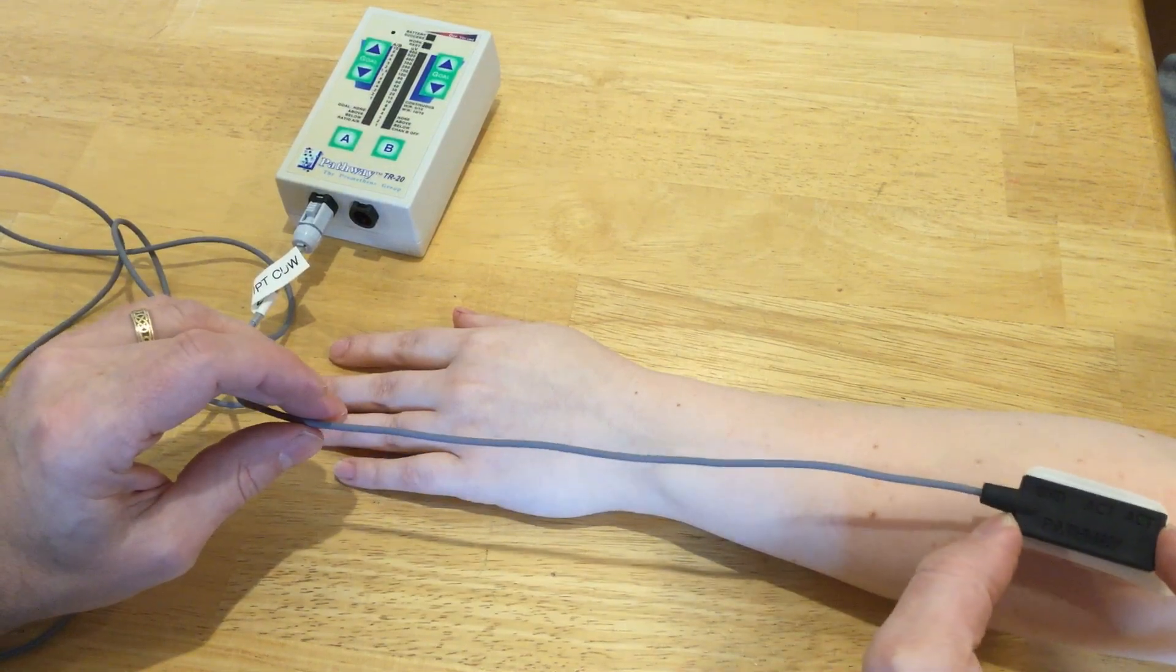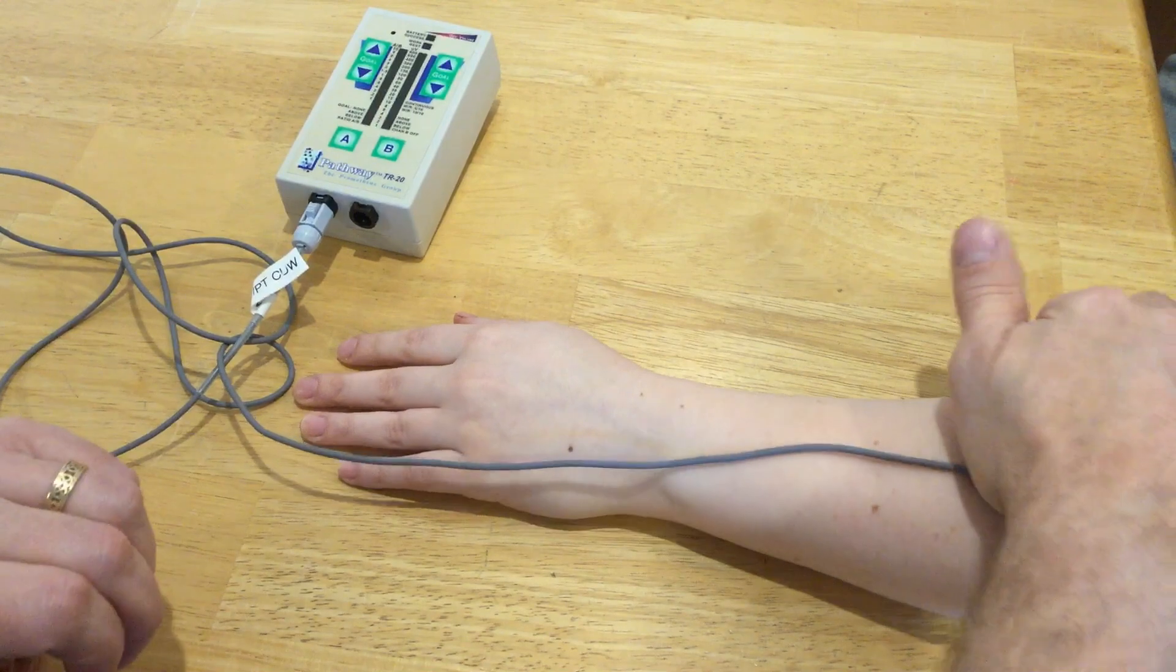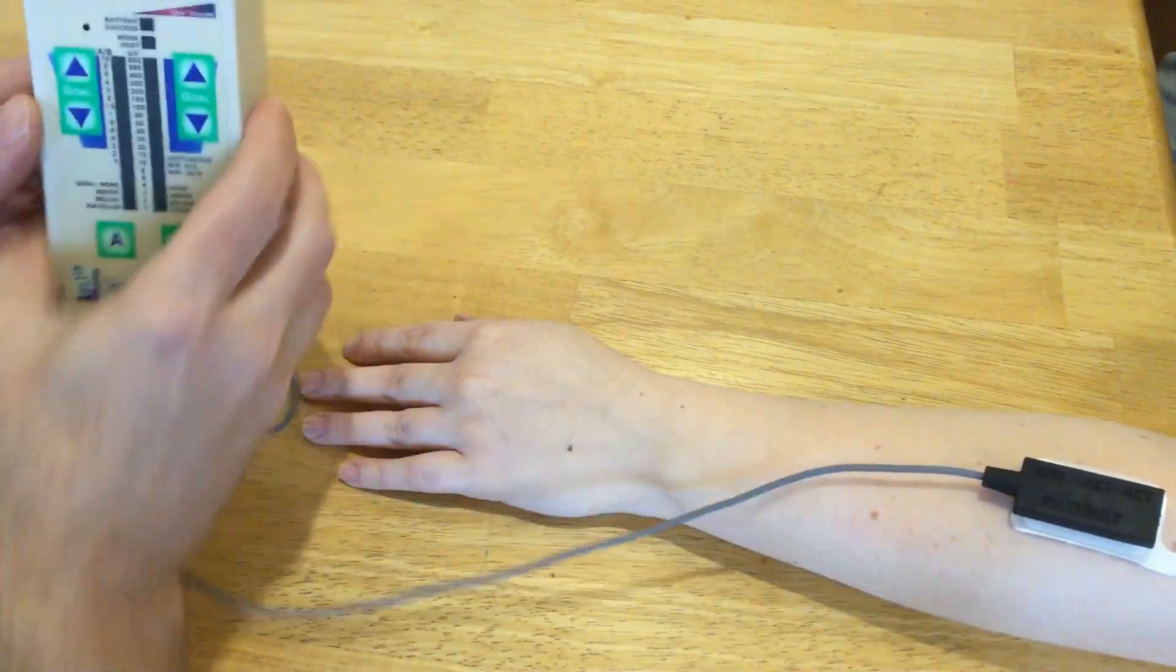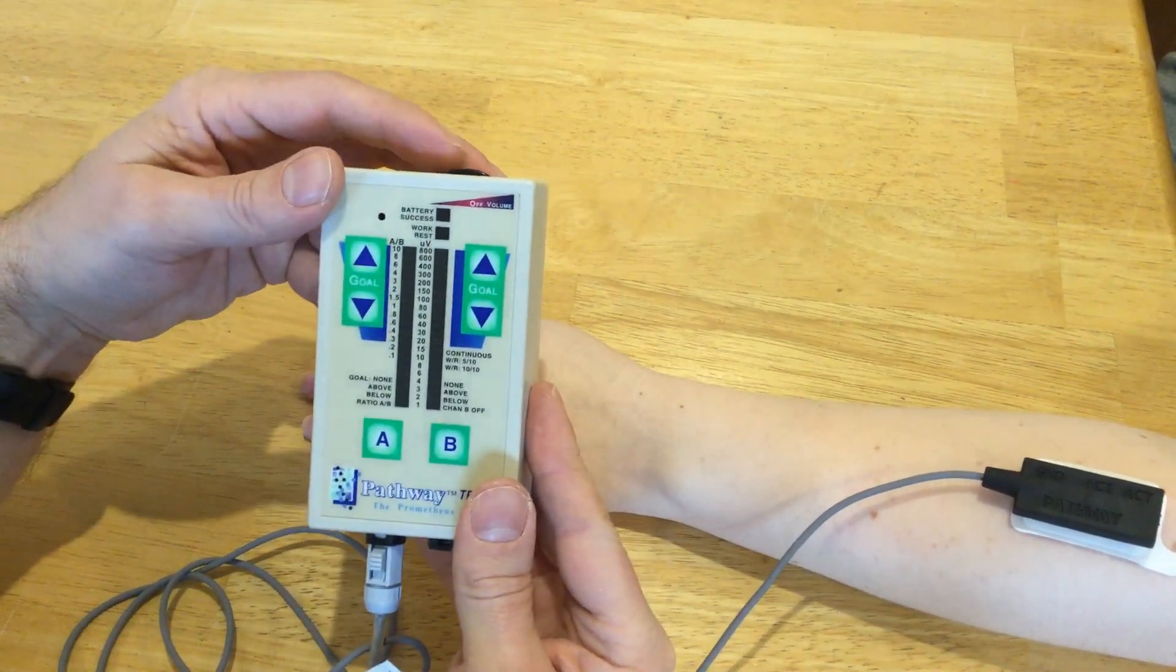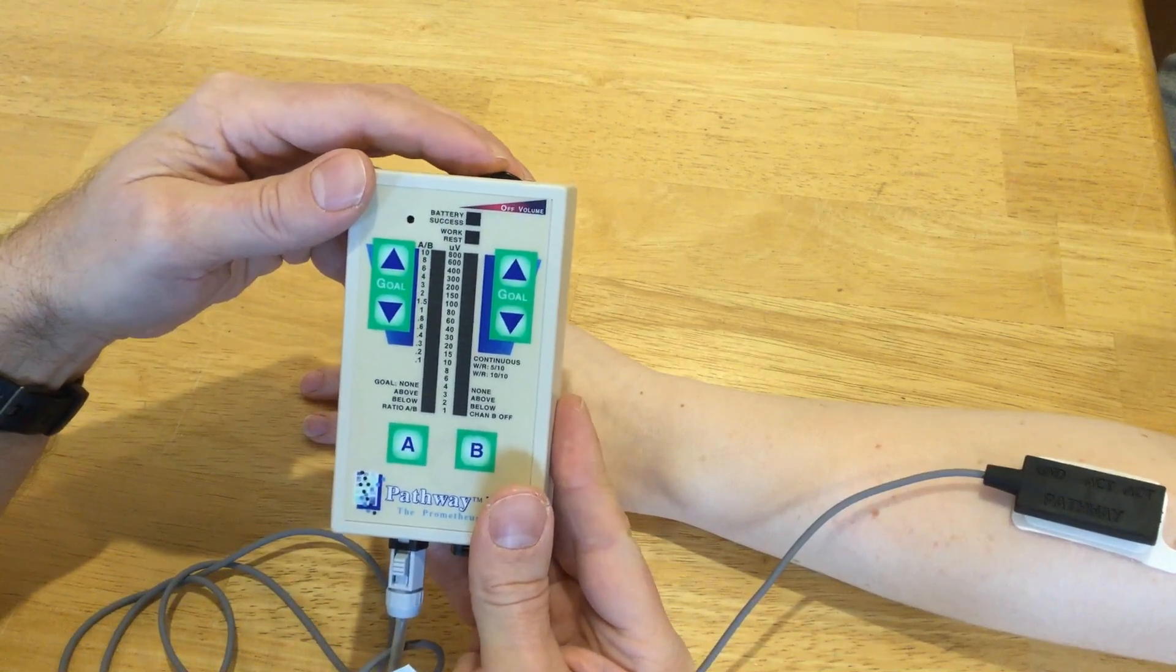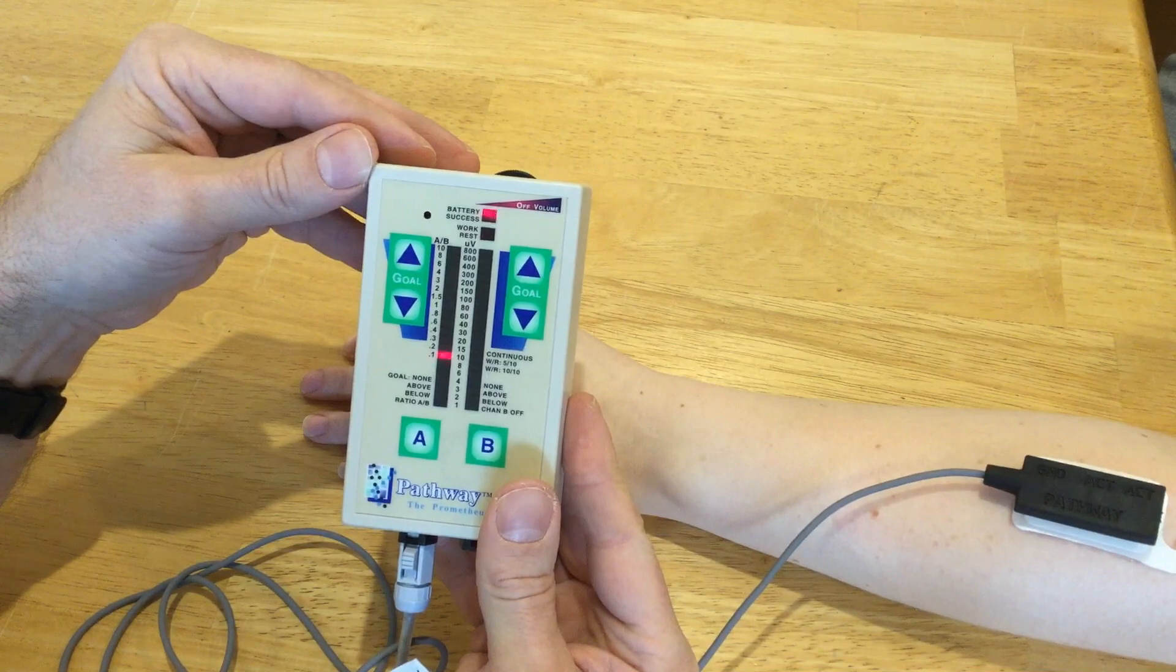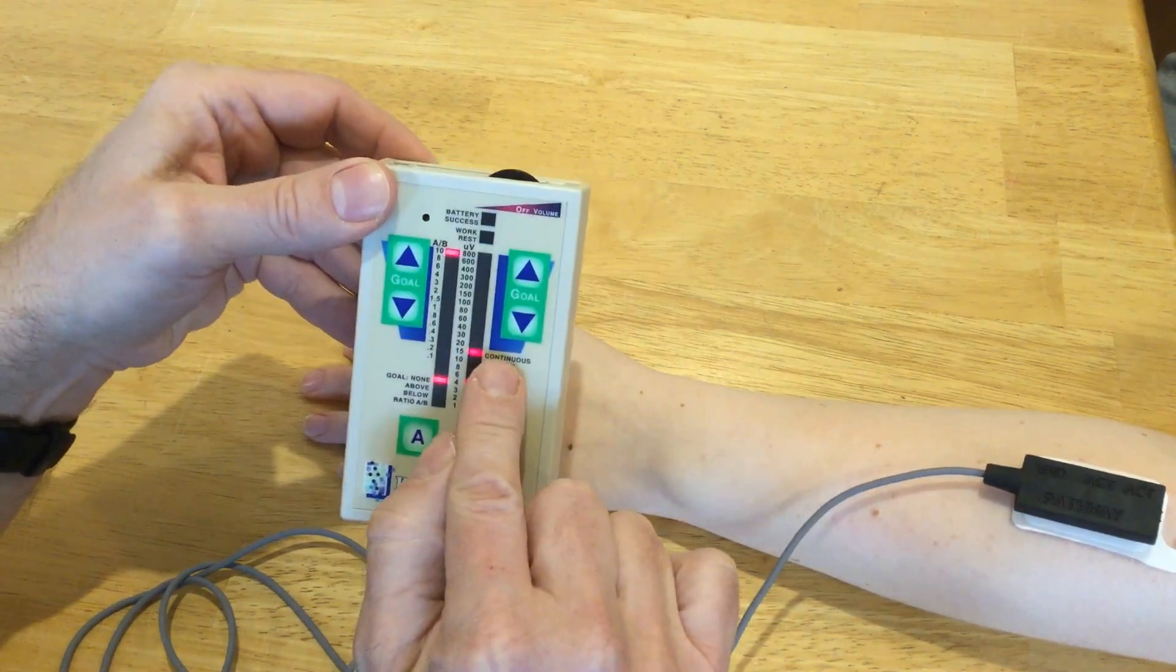I'm just going to take this and put it over wrist extensors generally. All right, and then here on the unit I'll just show you how this works. To turn it on you just rotate the dial and it turns on, goes through a couple little tests here, and then it shows we're doing continuous.